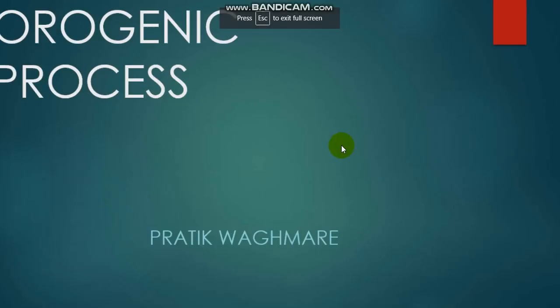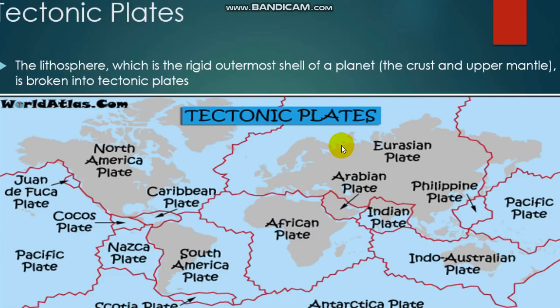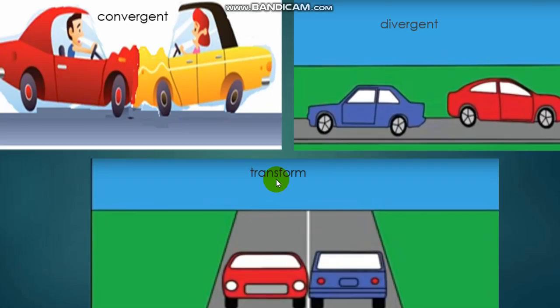In this video we'll be discussing the lithosphere of diastrophism. The Earth's lithosphere is divided into seven major plates and a number of minor plates. Since these plates are moving continuously over the asthenosphere, the relative motion determines the type of boundary they share. These boundaries could be divergent, convergent, or transformed. Now witness this.